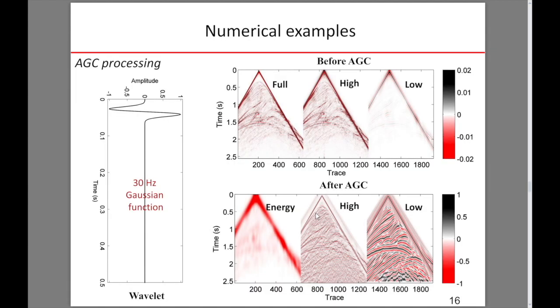This slide shows the AGC process. First, we use a 13 Hz Gaussian function as the wavelet to generate the full frequency data. Then we filter the data into high and low frequency data. As we know, in shot gathers, direct waves have the main energy of the data. If we directly feed data to the network, we cannot make successful weak reflection predictions. So we need to do energy gain. This is energy extracted from seismic data. These two are the full and low frequency data after using AGC.